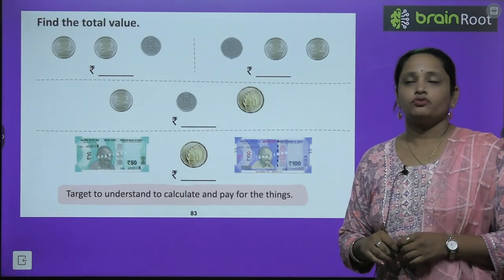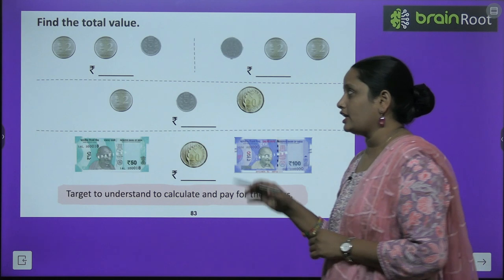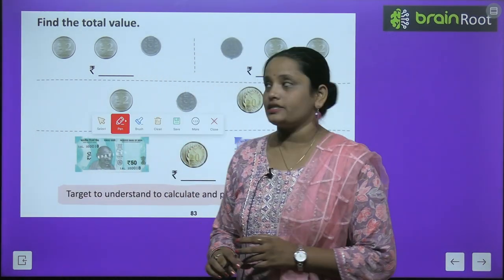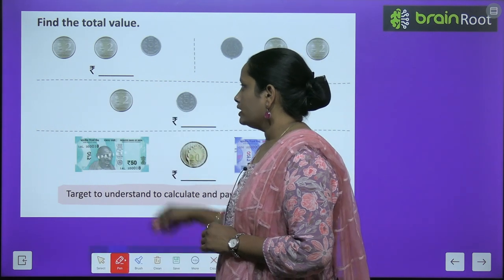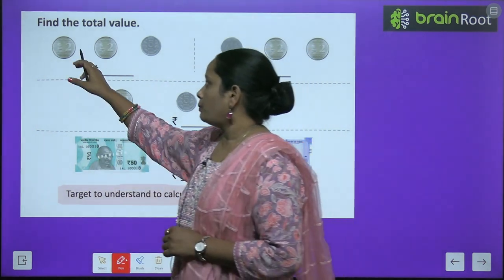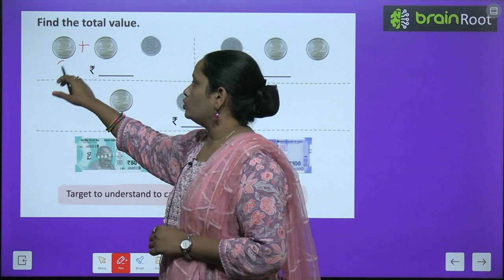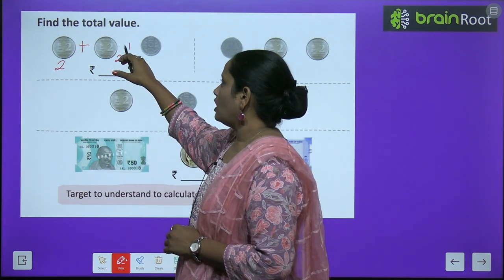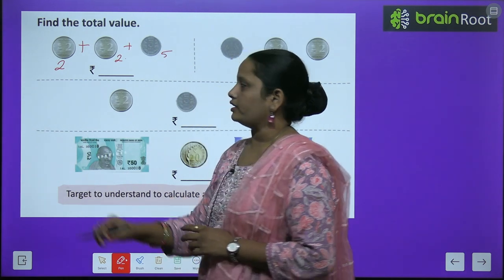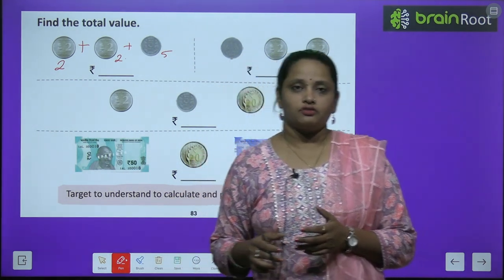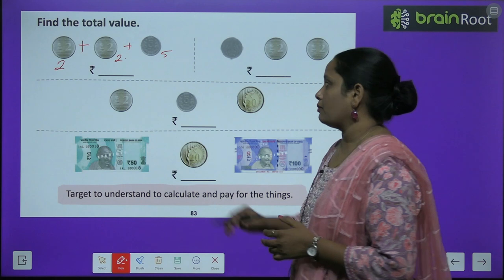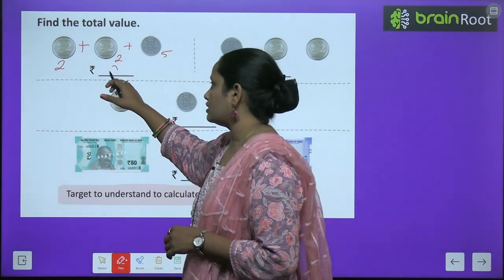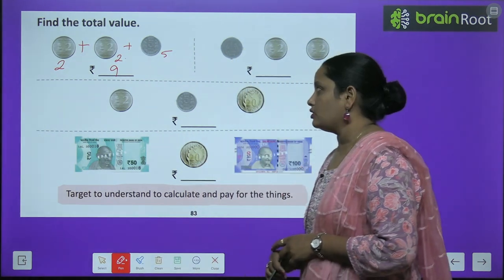Now let's find the total value. हमें यहाँ पे कुछ notes और coins दिए हैं, इन को plus करना है और total amount लिखना है. पहला है 2 रूपी का coin, again 2 रूपी का coin, और 5 रूपी का coin. So 2 plus 2 equals 4, and 4 plus 5 equals 9. So total कितने rupees हो गए? 9 rupees.